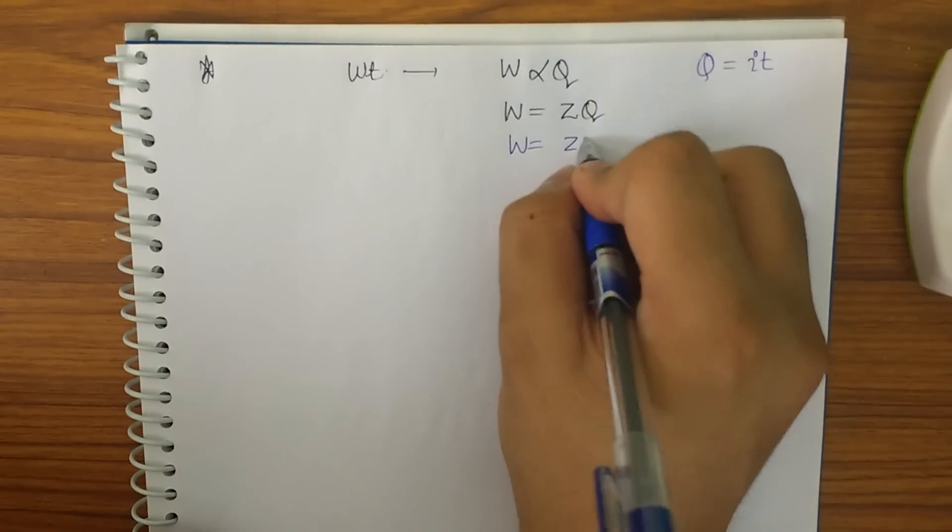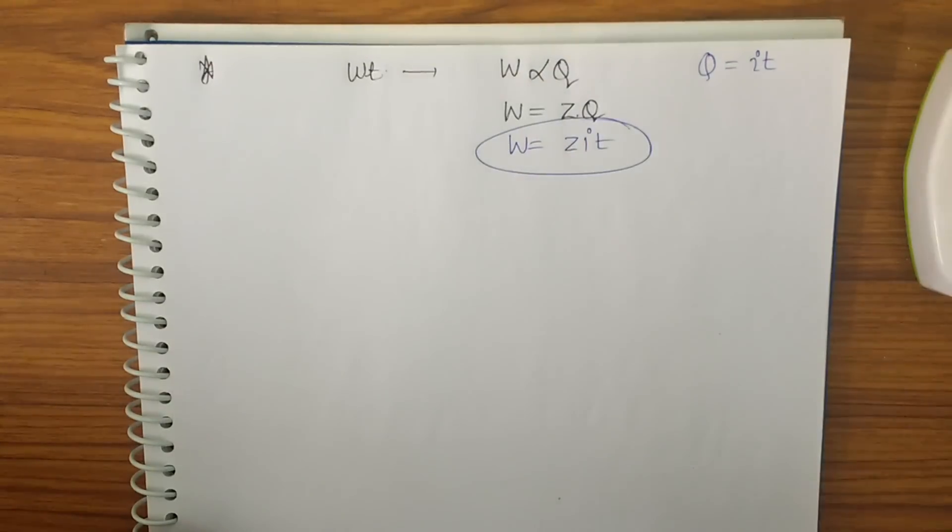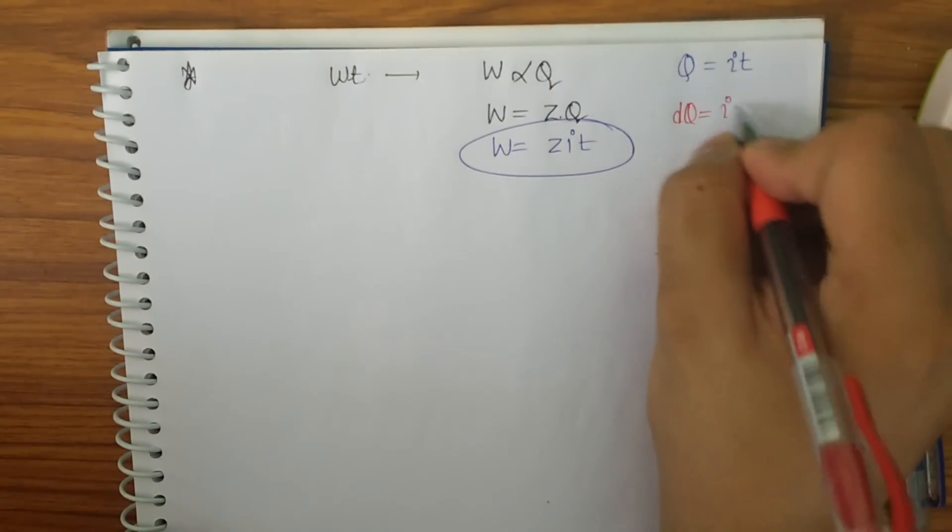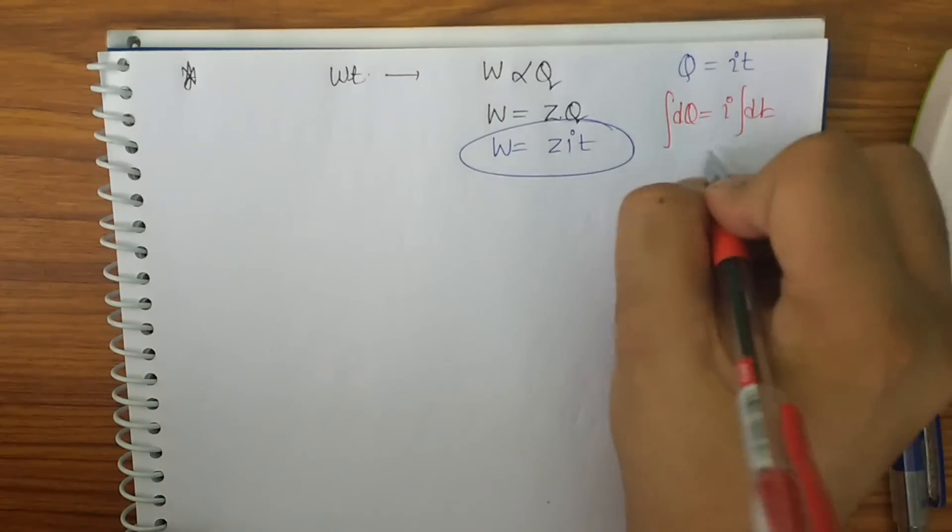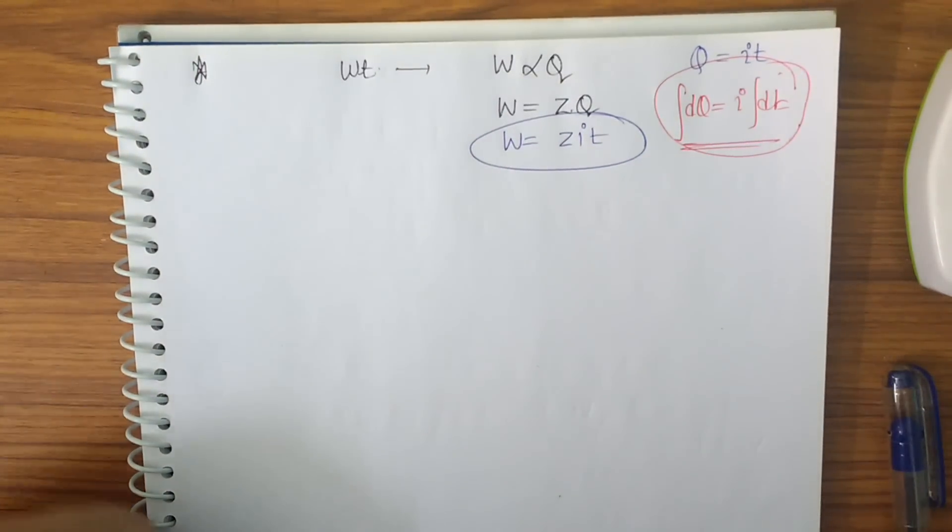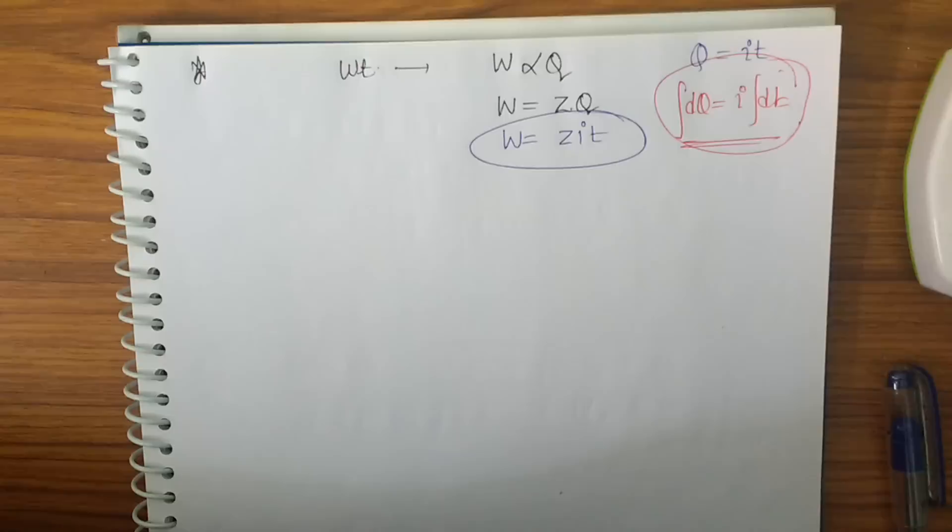So I can put here, so W is equal to Z into I into T. Or in the particular differential form we can write DQ is equal to I into DT integrating both sides. So this part will be critical for getting into chemistry because a major question can always be made on this part.